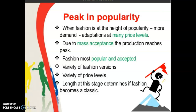Peak in popularity: when fashion is at the height of popularity, there is more demand and adaptations at many price levels. In the peak stage, a particular style is available at all price levels — for example, a garment may be available at 10,000, 5,000, 2,000, even 1,000. The original cost may have been 50,000 in the introduction stage, but now it is manufactured at various price levels in different industries, so even middle class and lower middle class people can also purchase it.